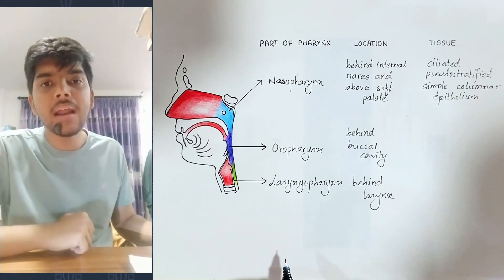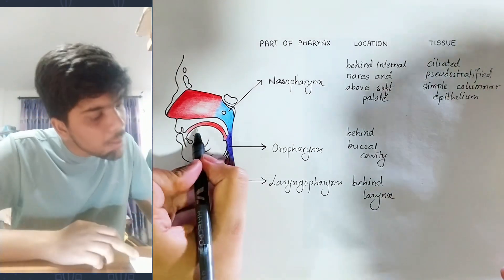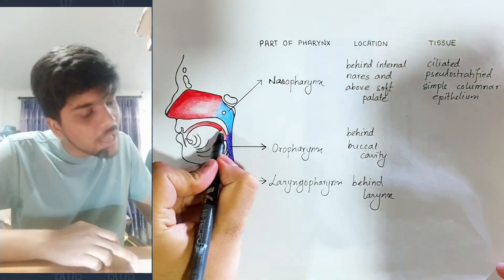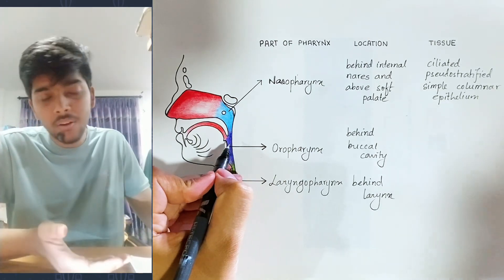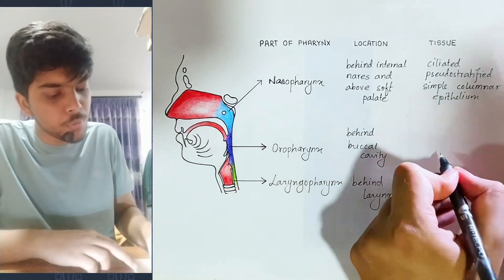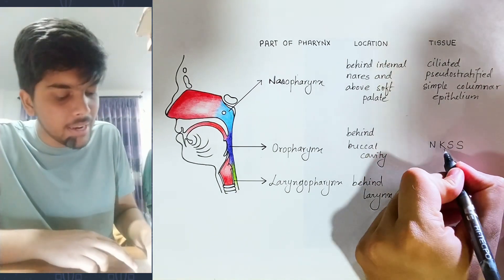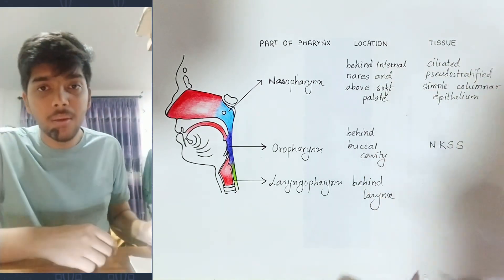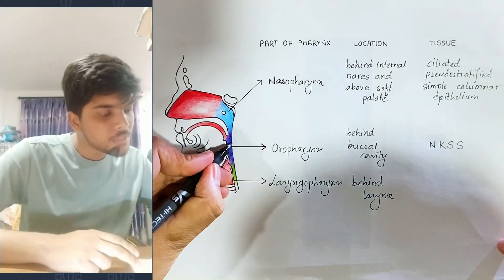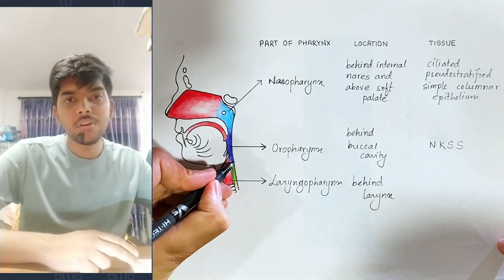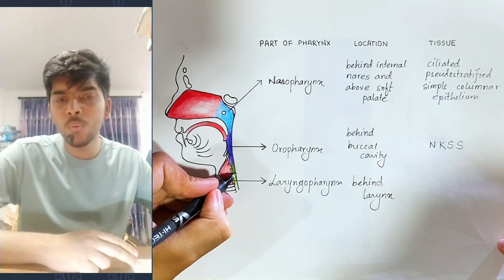The buccal cavity is lined by non-keratinized stratified squamous epithelium. So the oropharynx internal wall is also lined by non-keratinized stratified squamous epithelium, since it corresponds to the buccal cavity. The oropharynx is therefore lined by this same epithelium.